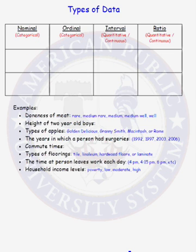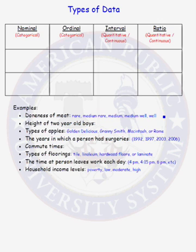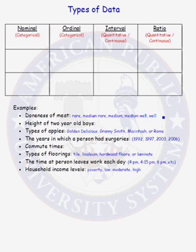Now let's look at some examples and classify them as nominal, ordinal, interval, or ratio. The first variable is doneness of meat: rare, medium rare, medium, medium well, or well done. There's a natural order from least done to most done, but we cannot take differences between a medium well piece of meat and a medium rare piece of meat. So there is order, but differences don't make sense. Therefore, doneness of meat is an ordinal type of data.